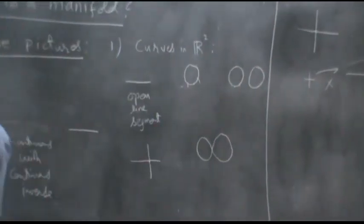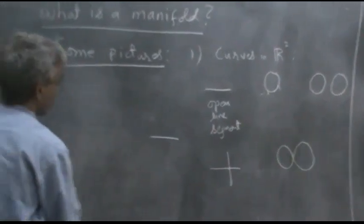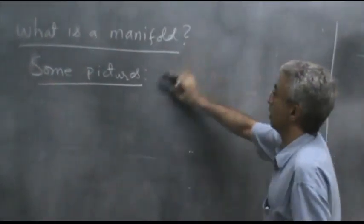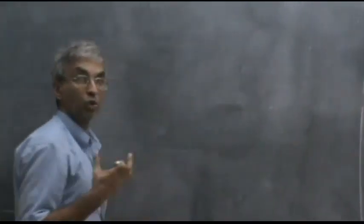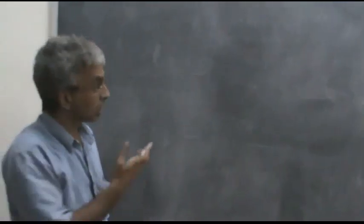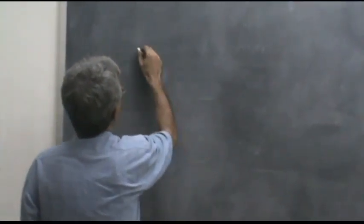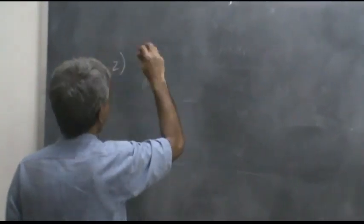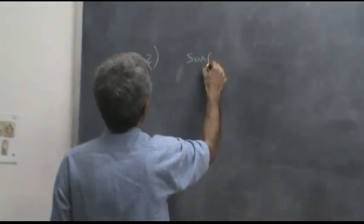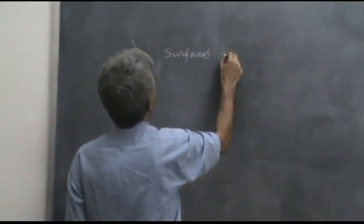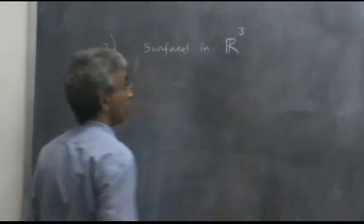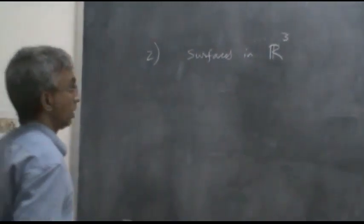So this already shows what we are looking for: namely the property that if you stay close enough to a point, a neighborhood should look like a line segment. But let's go one dimension higher. The second series of examples is surfaces in R3 — just like curves in R2, we have surfaces in R3.